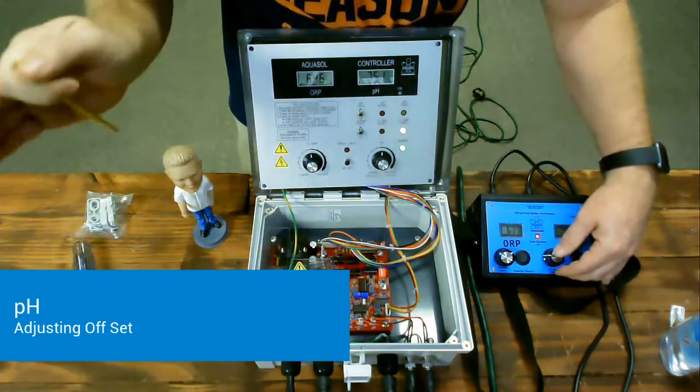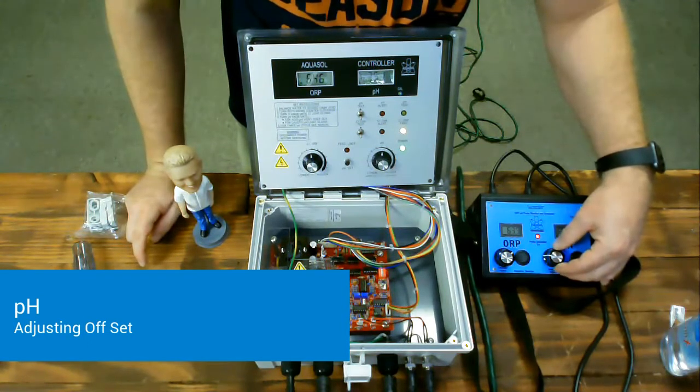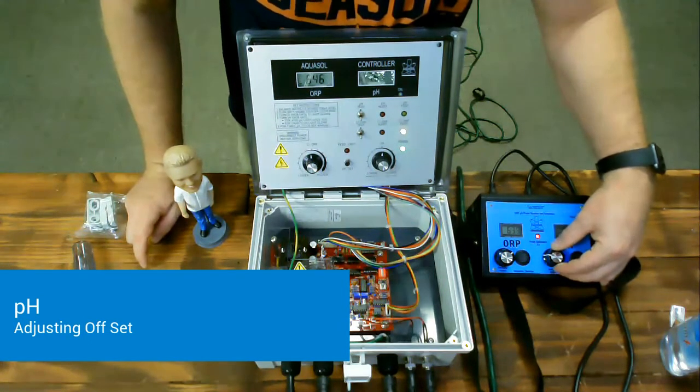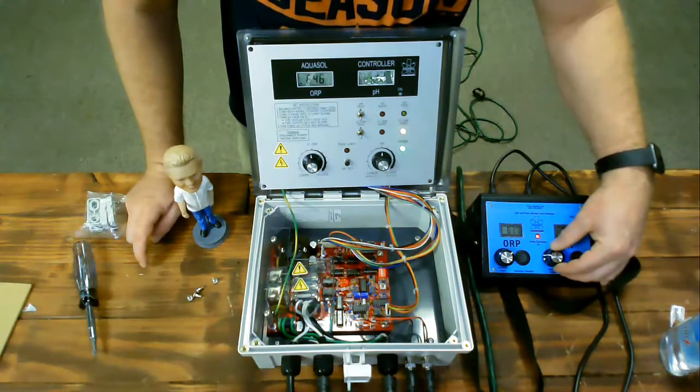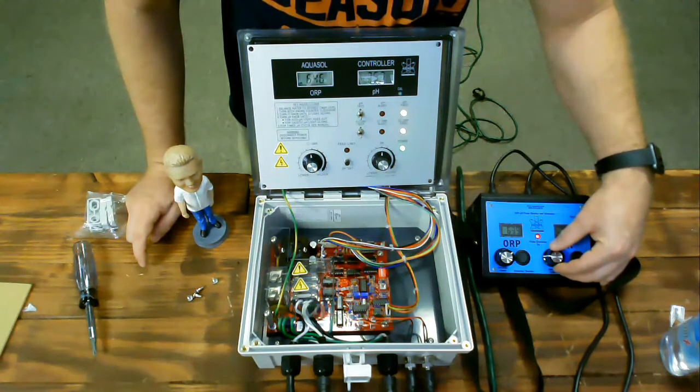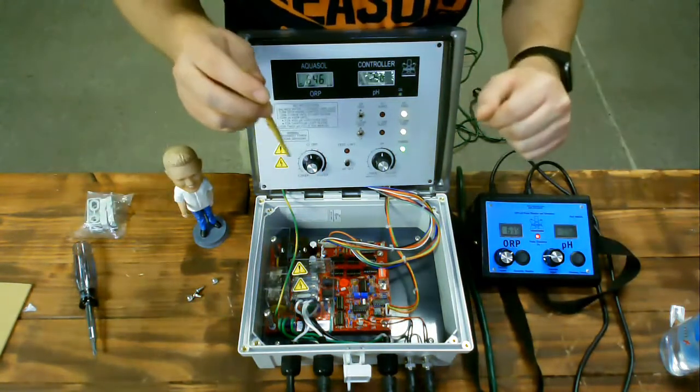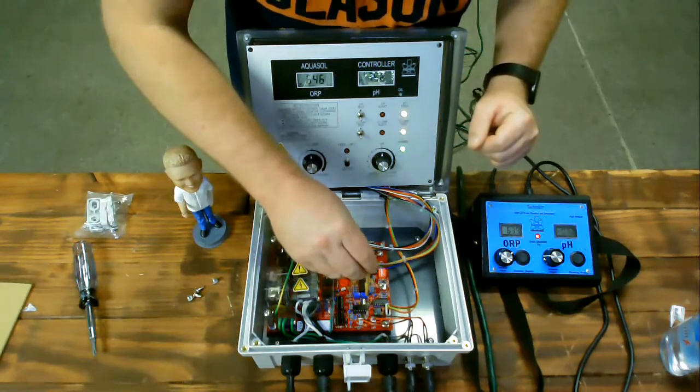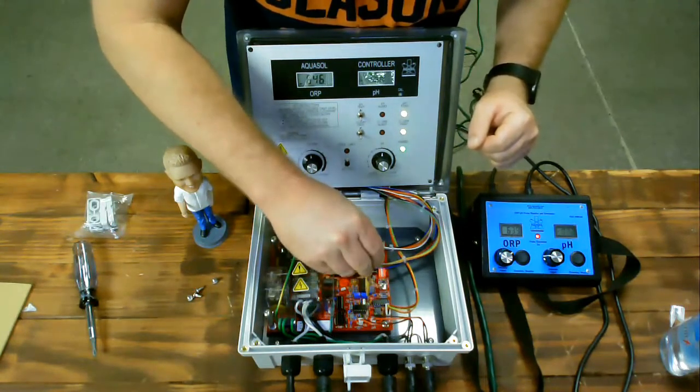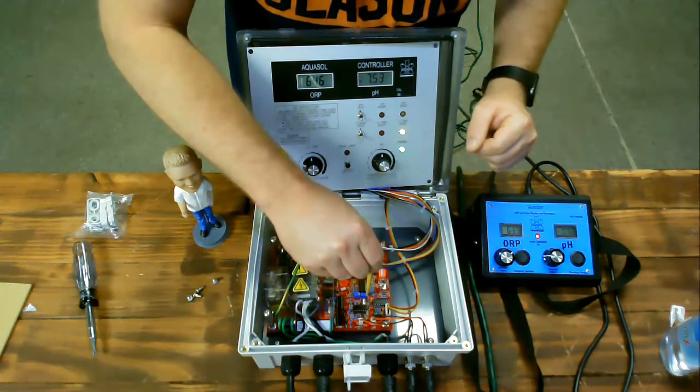Now, we'll use the signal generator to adjust the pH offset. In this scenario, the generator, acting as the probe, is sending a signal of negative 28 millivolts, however, the pH of the pool is 7.4. So, we will offset the millivolt reading by 6 millivolts to negative 34 millivolts, and then adjust the controller to turn on and off at that reading. This will effectively set the controller to maintain a pH of 7.5.